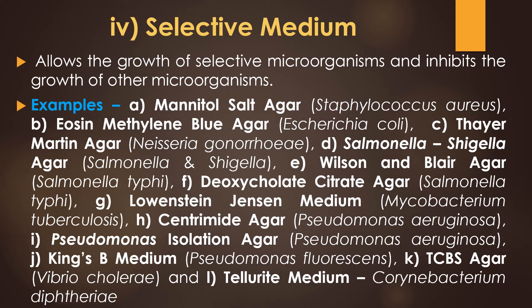The fourth type is selective medium, which allows growth of selected microorganisms while inhibiting unwanted organisms. Examples: mannitol salt agar for Staphylococcus aureus; eosin methylene blue agar for Escherichia coli; Thayer-Martin agar for Neisseria gonorrhoeae; Salmonella-Shigella agar for Salmonella and Shigella; Wilson and Blair agar and deoxycholate citrate agar for Salmonella typhi; Lowenstein-Jensen medium for Mycobacterium tuberculosis; cetrimide agar and Pseudomonas isolation agar for Pseudomonas aeruginosa; King's B medium for Pseudomonas fluorescens; TCBS agar for Vibrio cholerae; and tellurite medium for Corynebacterium diphtheriae.